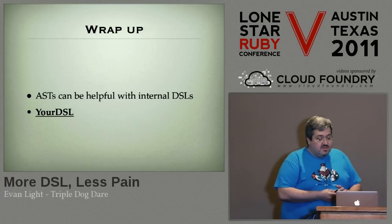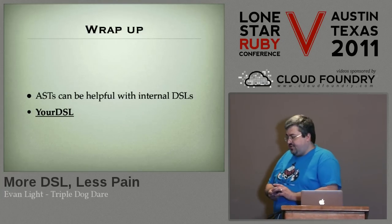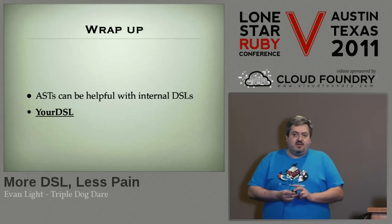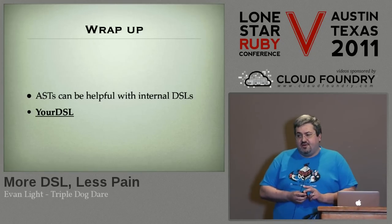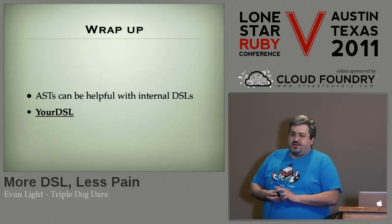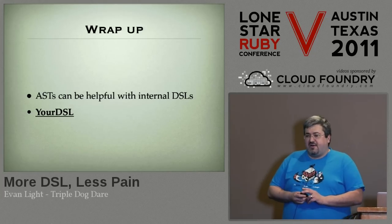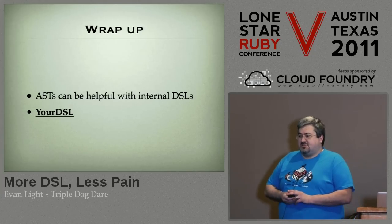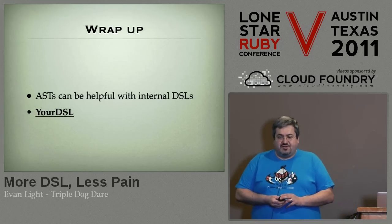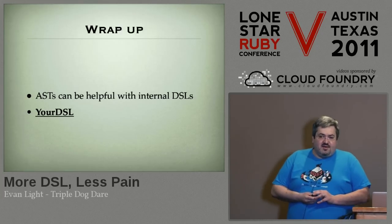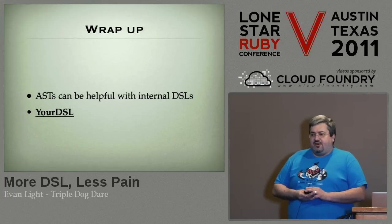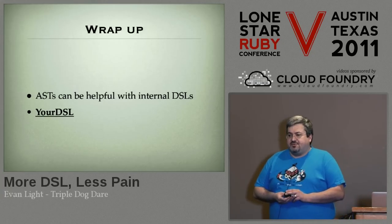To wrap up: ASTs are going to be really helpful with your internal DSLs. This internal DSL compiler allowed me to take a lot of ugly code in Coda and literally rewrite it in half an hour. I don't think that's a testament to me — I think it's more a testament to the power of the idea, as ASTs are a proven concept. YourDSL gem provides a fairly simple implementation. If you guys want to fork it, play with it, do what you want with it — I'm open to more input on it.